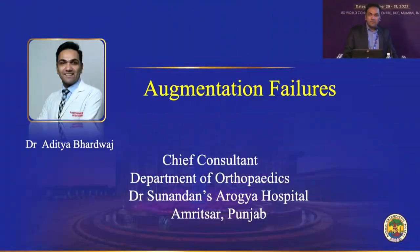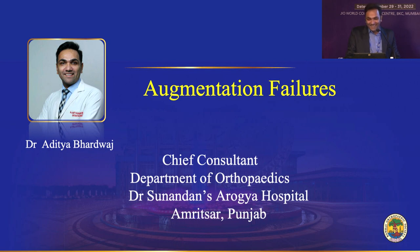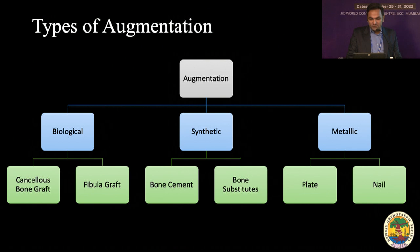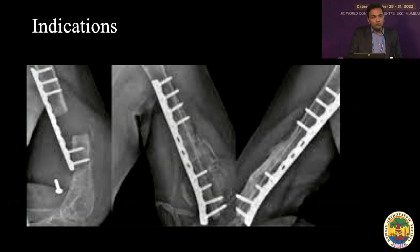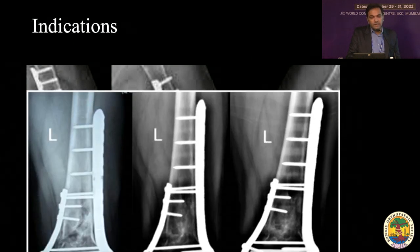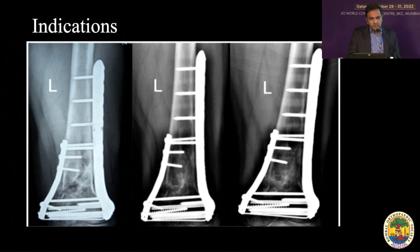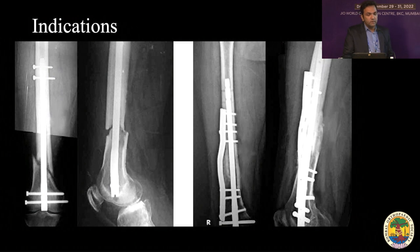Good afternoon everyone. I will not be standing long, keeping you away from lunch. When I was given this topic, my first reaction was about augmentation. What is augmentation, as told by Dr. Kashyap? It is the addition of any substance to your construct to add more stability to it. It can be biological, synthetic, or metallic. Biological can be cancellous bone graft or a fibular stud graft. Synthetic can be bone cement or a bone substitute. Metallic can be a plate, nail, or a simple encircled wire. It has clear indications: non-union — you can add a fibular stud graft with a longer plate and it unites. In medial comminution of a distal femur, you can add a medial plate for a stable construct. Or if a nail is failing, you add a plate with bone graft and it goes on to union.